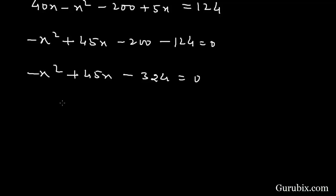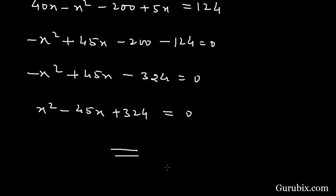Now we shall multiply both sides by minus 1, giving us x squared minus 45x plus 324 equals 0. This is the mathematical representation of the statement of the example. Thank you.